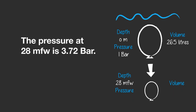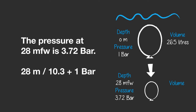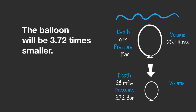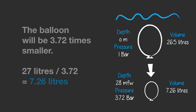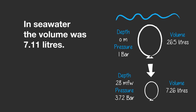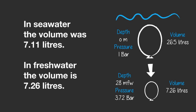Now let's take the balloon to the second depth of 28 meters of freshwater. The pressure at 28 meters of freshwater is 3.72 bar: 28 divided by 10.3 equals 2.72, plus 1 bar of the surface pressure. So the balloon will be 3.72 times smaller. 26.5 liters divided by 3.72 equals 7.26 liters. So the new volume of the balloon is 7.26 liters. In seawater the volume was 7.11 liters, and in freshwater it is slightly larger at 7.26 liters.